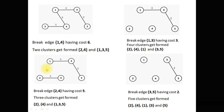In the first iteration we get 2 clusters and this is the input for our next step. After that we cut the edge 2-4 having cost 5. When we break edge 2-4, 3 clusters are formed: {2}, {4}, and {1, 3, 5}. This is the output of the second step — 3 clusters: {2}, {4}, and {1, 3, 5}.